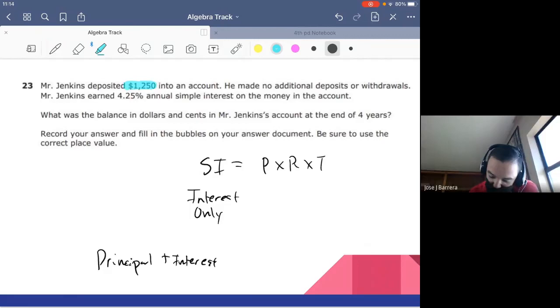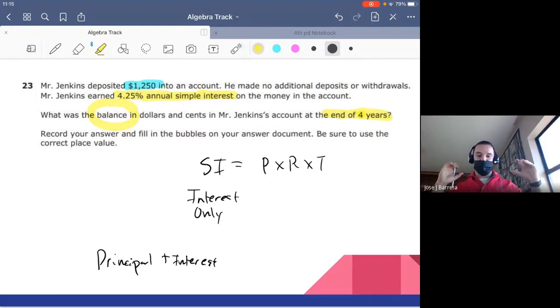Mr. Jenkins deposited $1,250 into an account. He made no additional deposits or withdrawals. He earned 4.25 annual simple interest on the money in the account. What was the balance, keyword balance, in dollars and cents in Mr. Jenkins' account after the end of four years? Now, one thing you need to look for when doing simple or compound interest. Do they want to know just the interest or do they want to know the balance of the account, which is principal plus interest? Since they want the balance, they want the principal plus the interest.